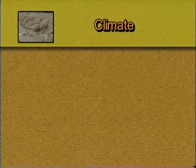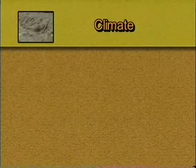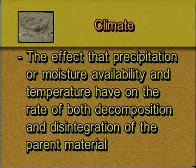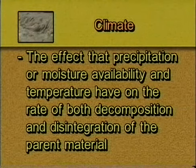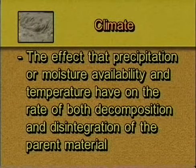So we define climate as the effect that precipitation — moisture availability — and temperature have on the rate of both decomposition and disintegration of the parent material from which soil is forming. It is really the primary factor which controls the rate of soil formation and development that takes place in a given location.